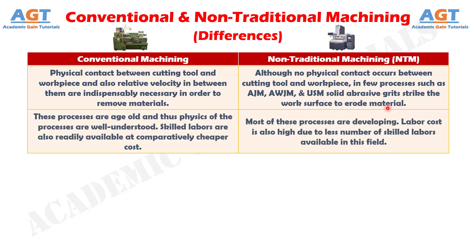Difference No. 6: Conventional machining processes are age-old and thus physics of the processes are well understood. Skilled labors are also readily available at comparatively cheaper cost, whereas most of non-traditional machining processes are still developing, and labor cost is also high due to fewer skilled labors available in this field.